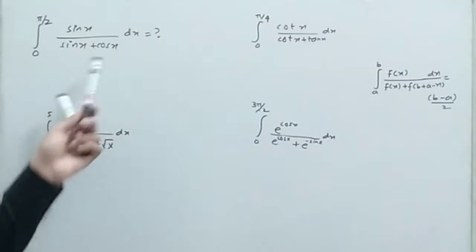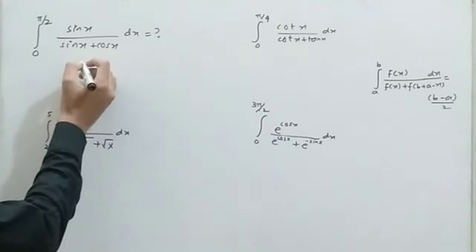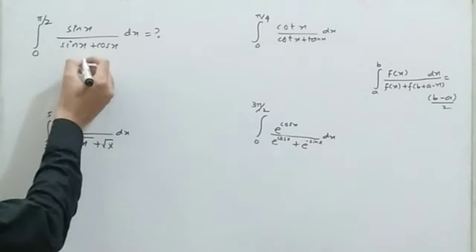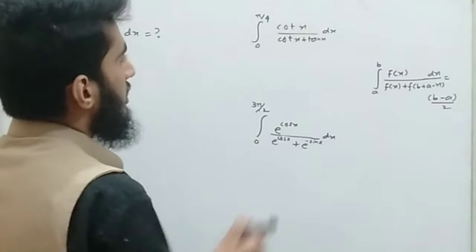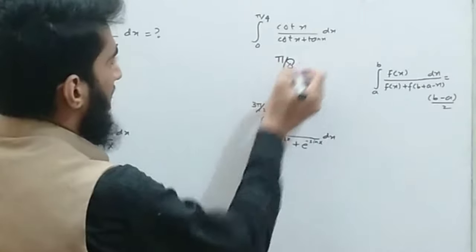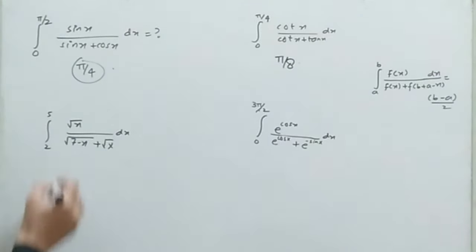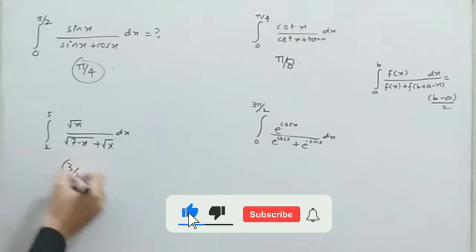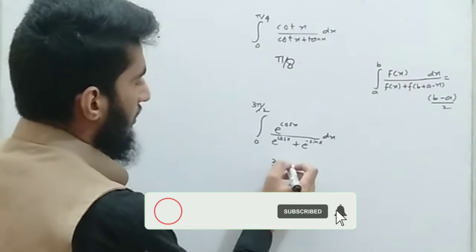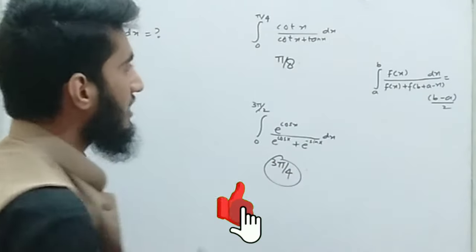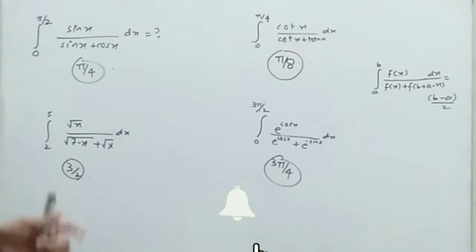There are total 4 integrals. The solution to the first integral according to the sharp trick will be π/4. The answer to the second integral using the sharp trick is π/8. The answer to the third integral will be 3/2, and the answer to the fourth integral will be 3π/4. How can we get these answers using a sharp trick?